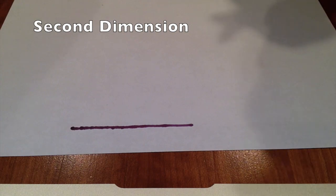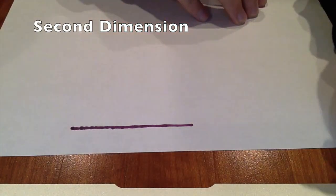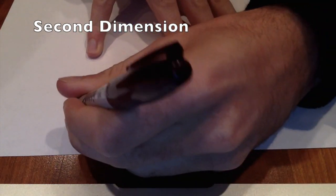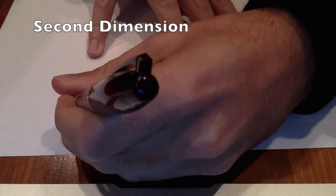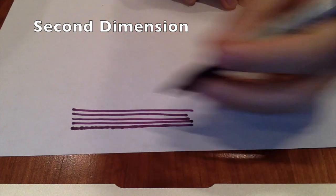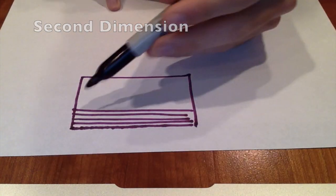And just as the first dimension was made out of an infinite number of dots to create a line, if we have a line and draw an infinite number of lines side by side, eventually what would occur is that they would all come together and create essentially a box shape.